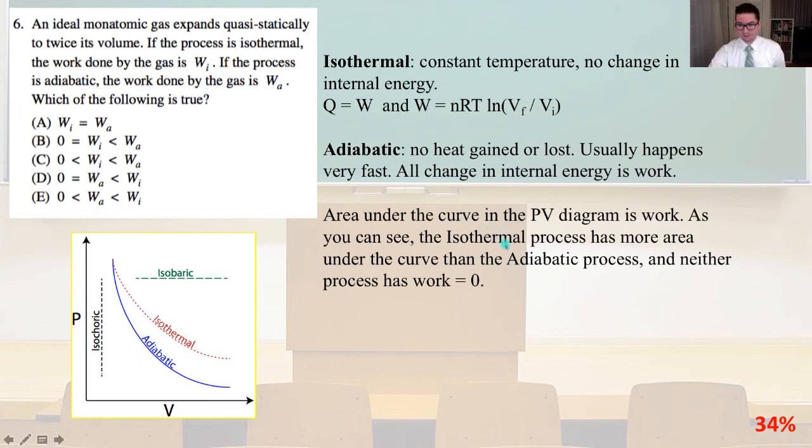Isothermal is constant temperature, no change in internal energy. So Q equals W, and W equals nRT times ln of the final volume over the initial volume, vf over vi.